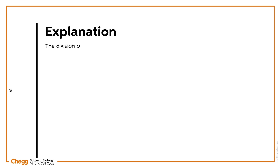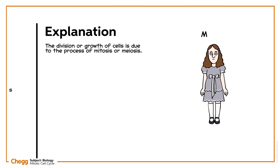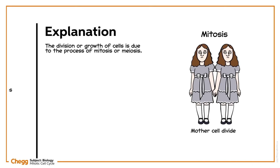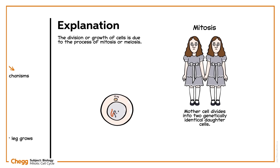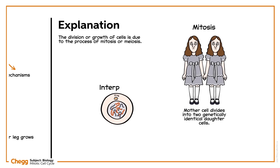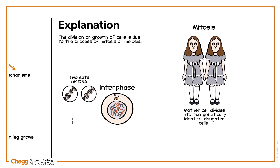The division, or growth, of cells is due to the process of mitosis or meiosis. Mitosis is a type of somatic cell division in which the mother cell divides into two genetically identical daughter cells. The cell first undergoes interphase, where the chromosomes in the nucleus replicate to generate two sets of DNA in the form of sister chromatids.